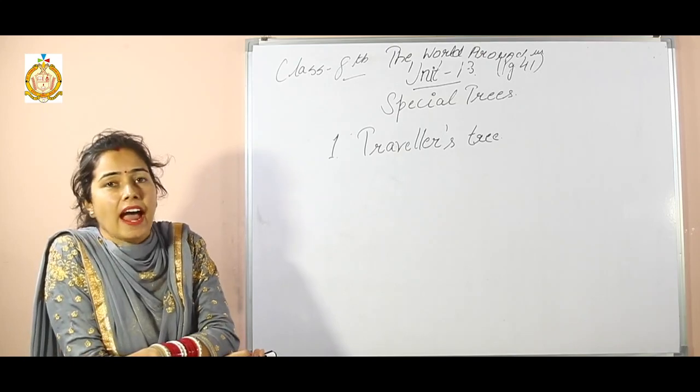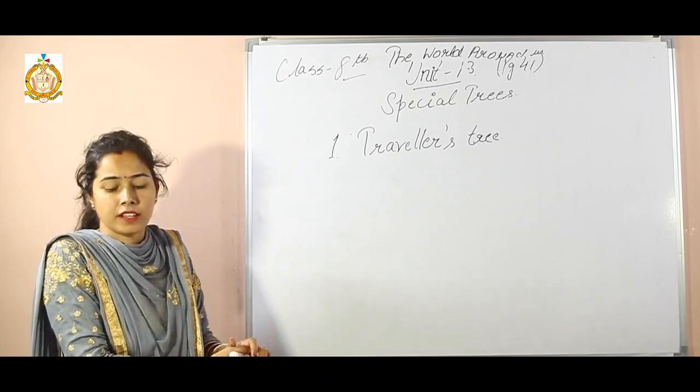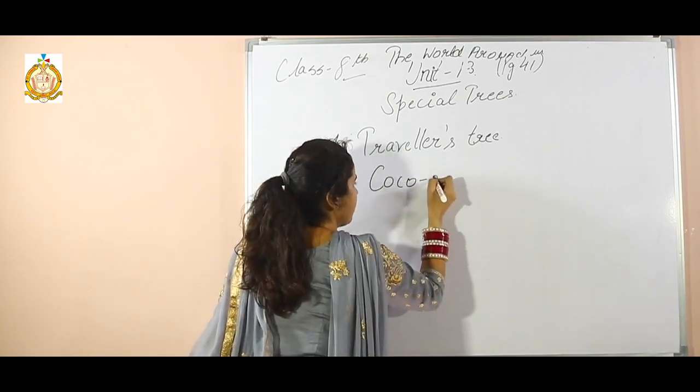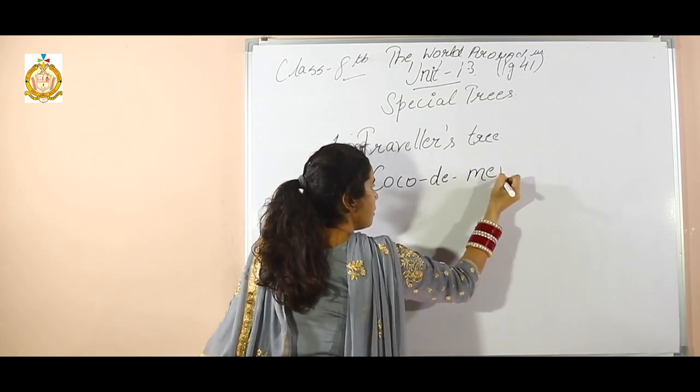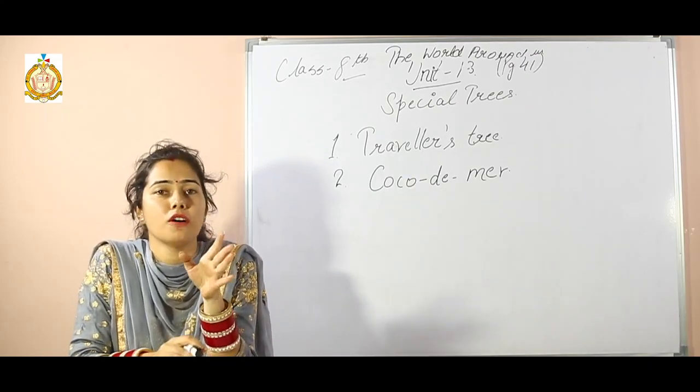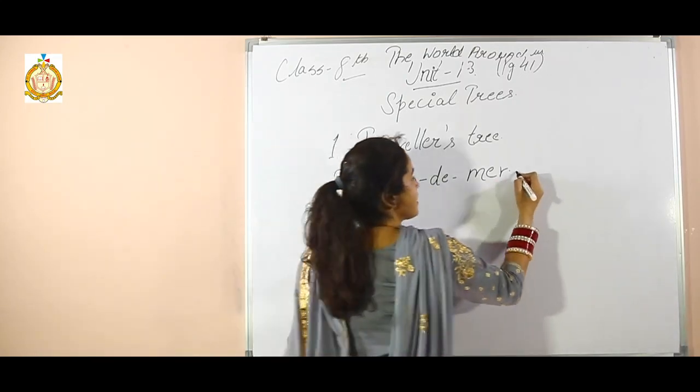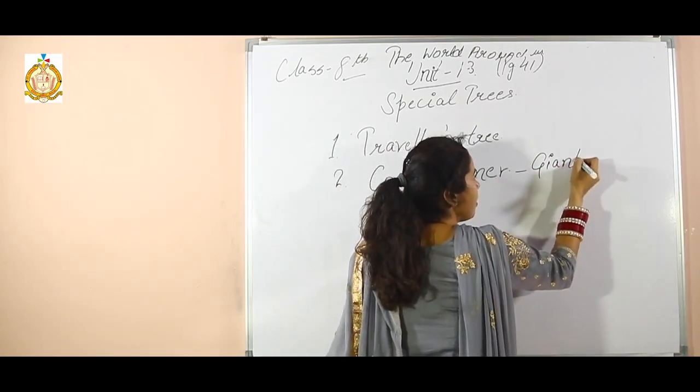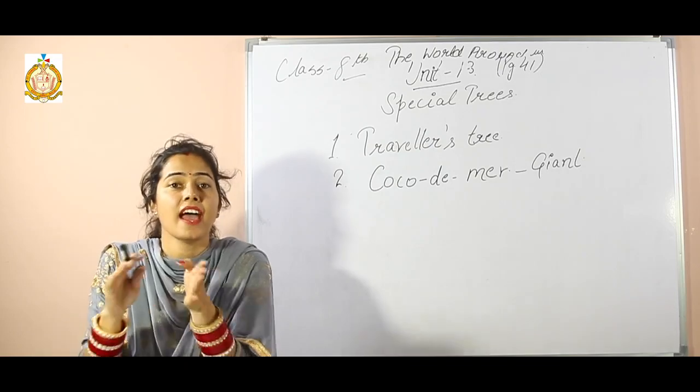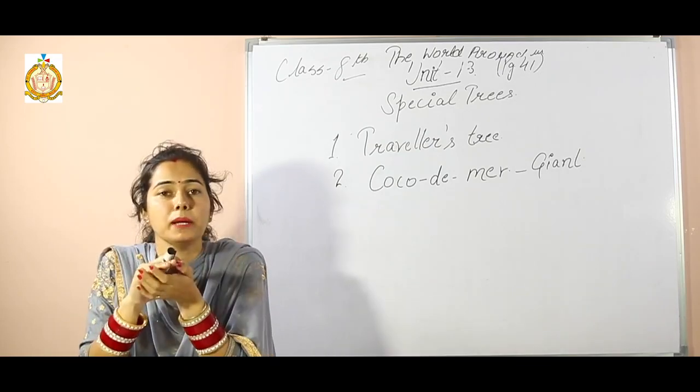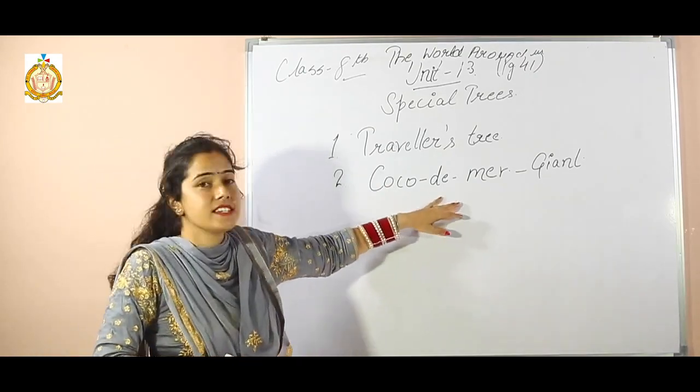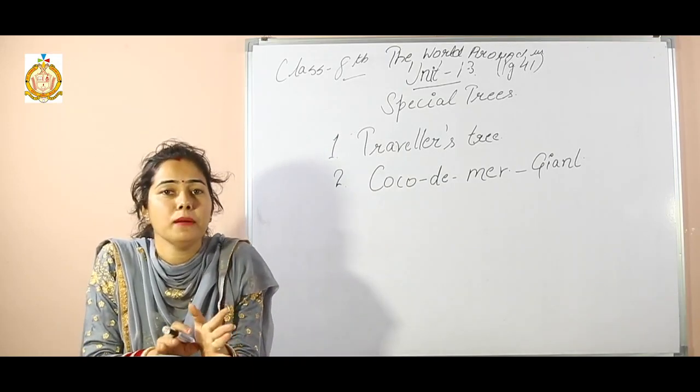The second one is Coco-de-mer. What are the characters of this tree? This tree is a giant of the plant world. Giant means biggest. It has some of the longest leaves and largest and heaviest seeds of any plant in the world.